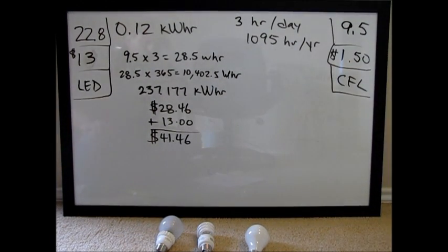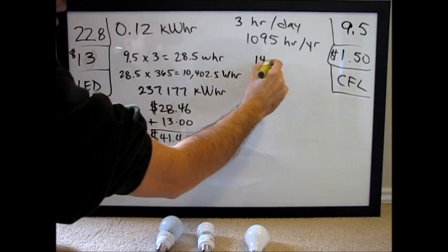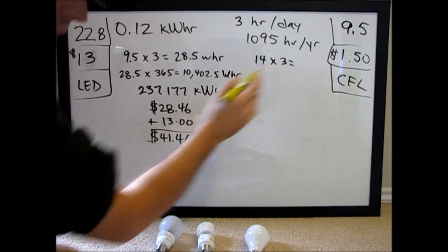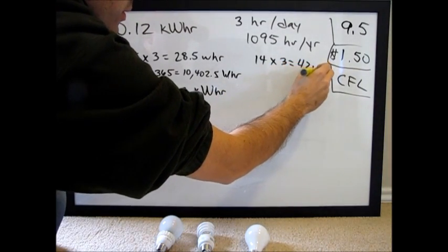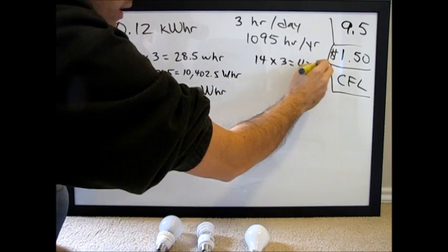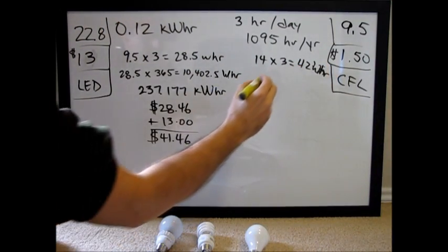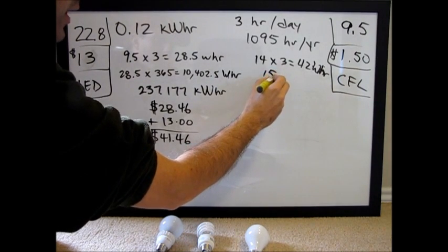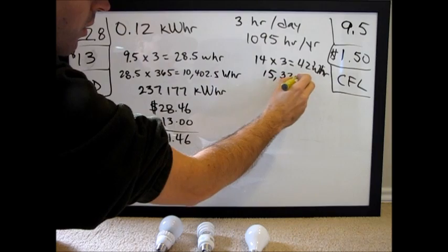Okay, so for the CFL bulb, we've got 14 watts times three hours per day equals 42 watt hours. Multiply that by 365, we've got 15,330 watt hours.